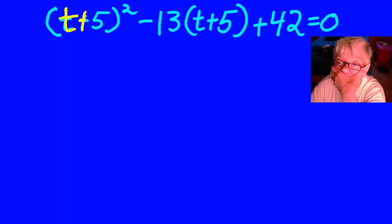Notice that the t plus 5 in parentheses that's being squared is the same as the t plus 5 in parentheses that is not being squared. We can cut down on the time and energy it would take to solve this equation by using u substitution.